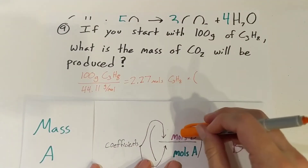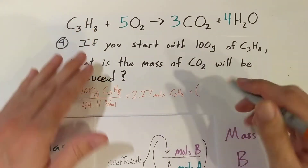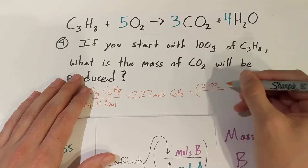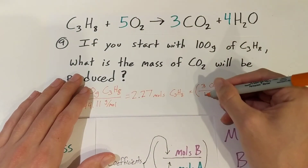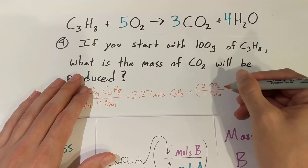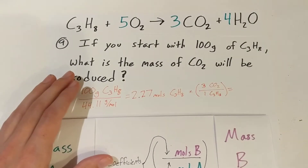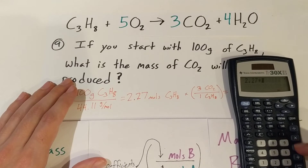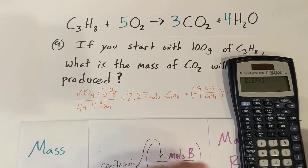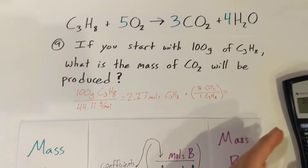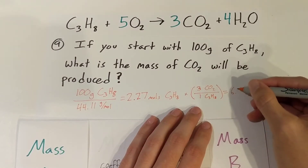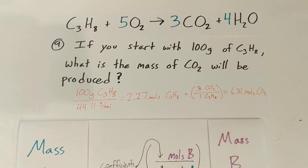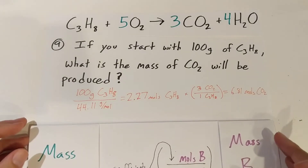This is where we go moles to moles. When going moles to moles, flip it over — put the coefficient of what we want on top. We want the coefficient of carbon dioxide, which is 3, and we're moving from propane, so propane goes on the bottom with a coefficient of 1. So this would be 2.27 times 3, which equals about 6.81 moles.